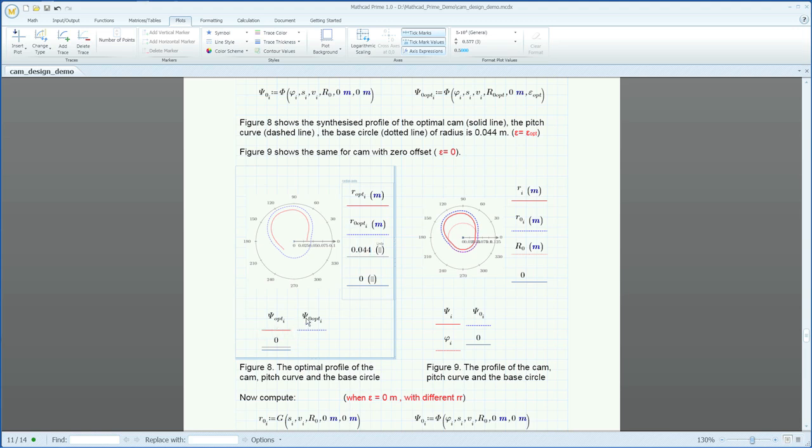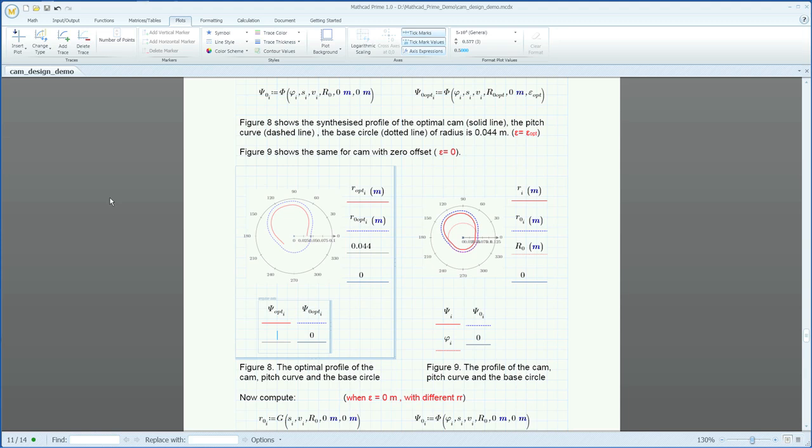Here, a simple change is made by adding another trace to the plot through the use of the ribbon. Alternatively, Shift-Enter could have also been used as a shortcut to do so.